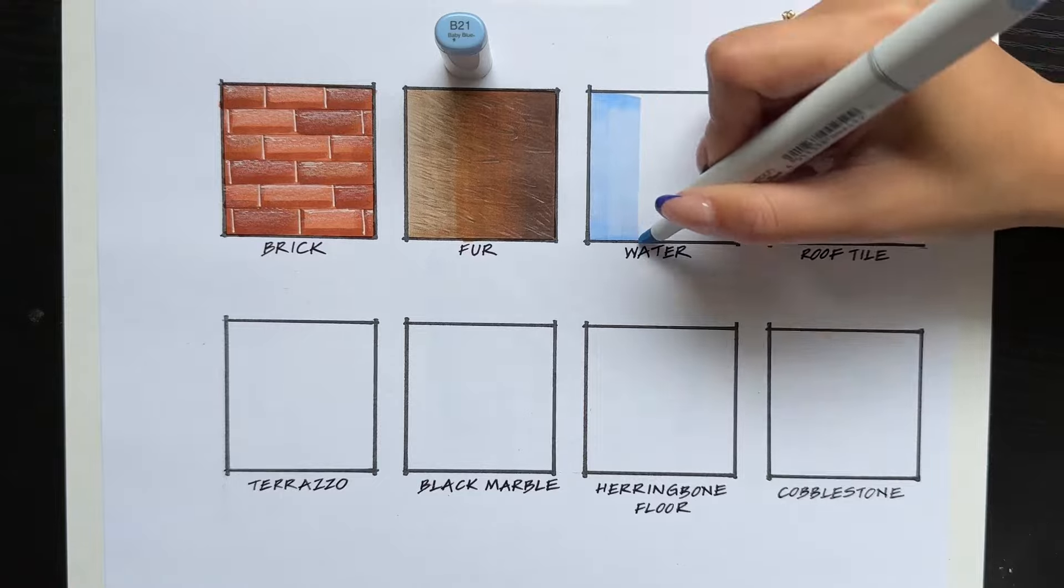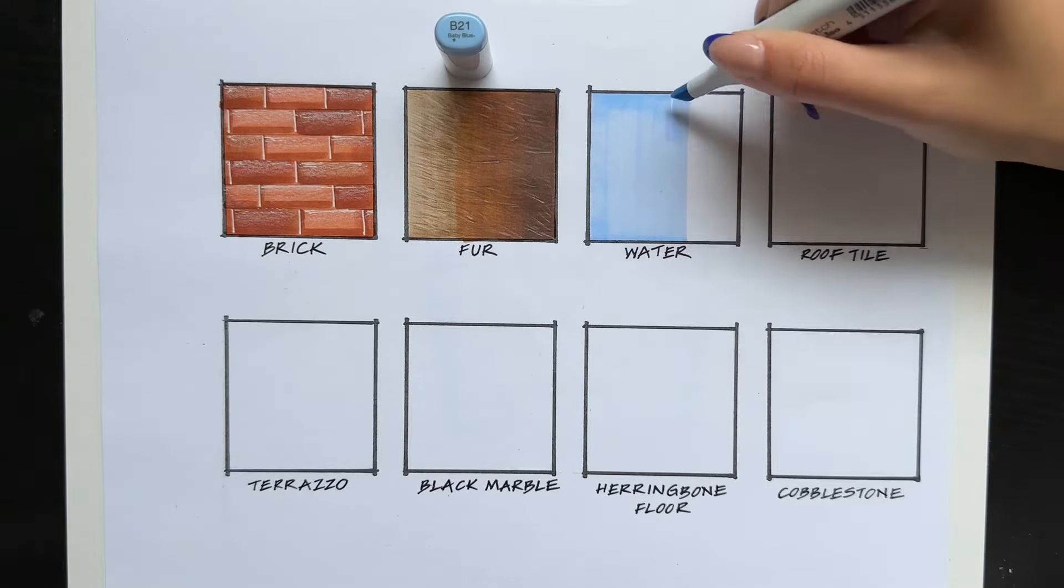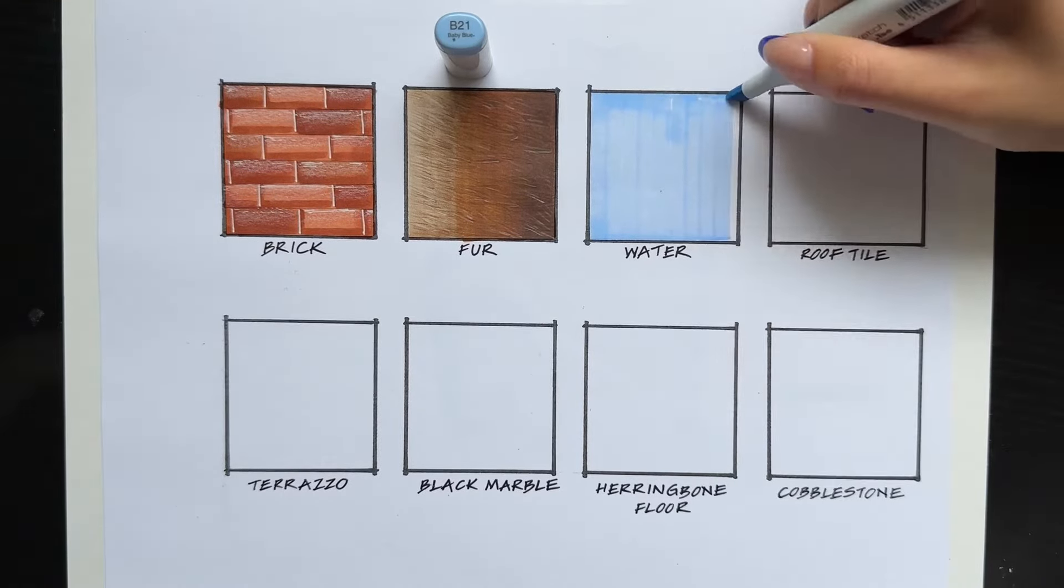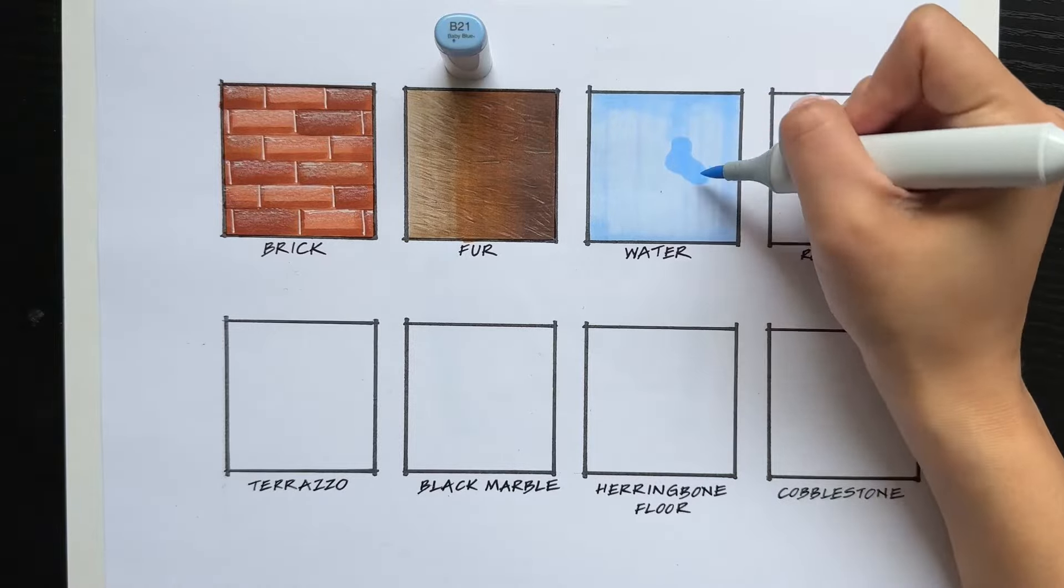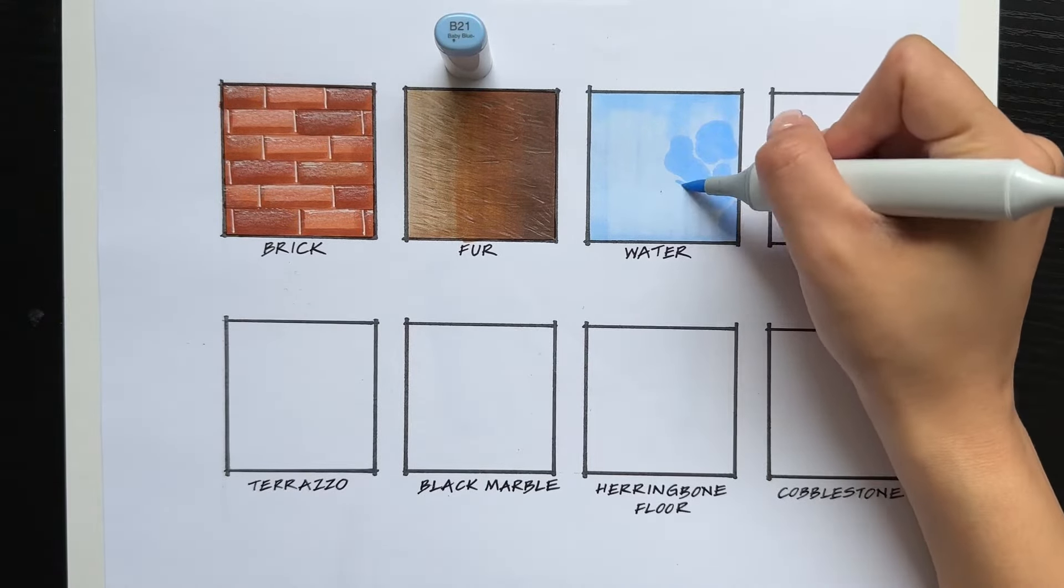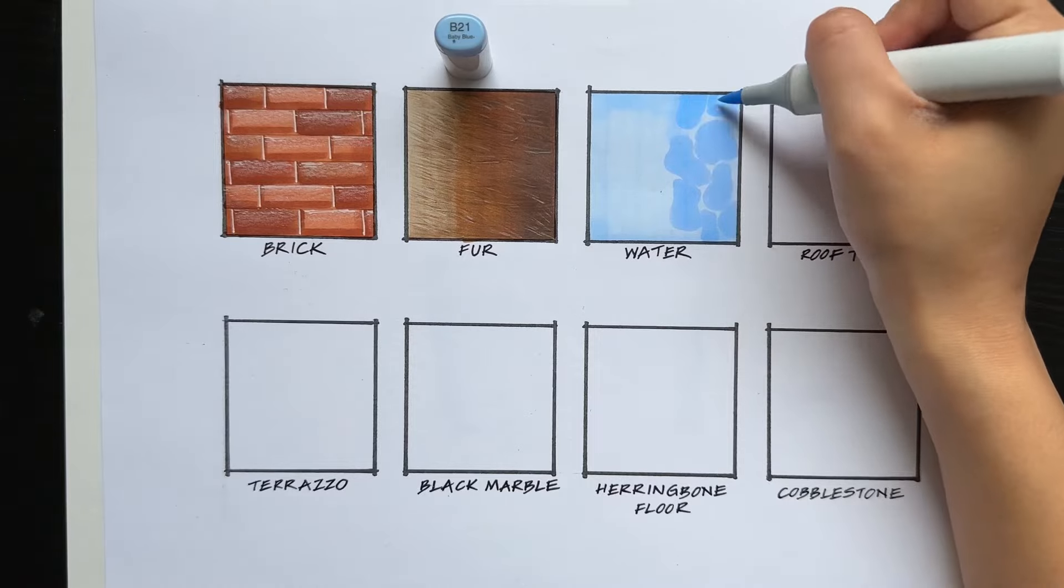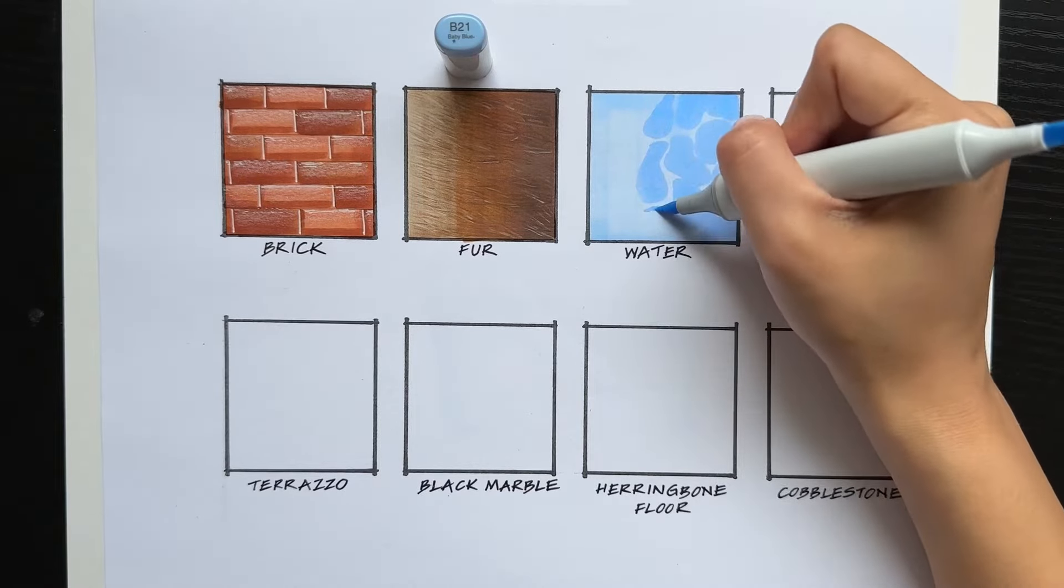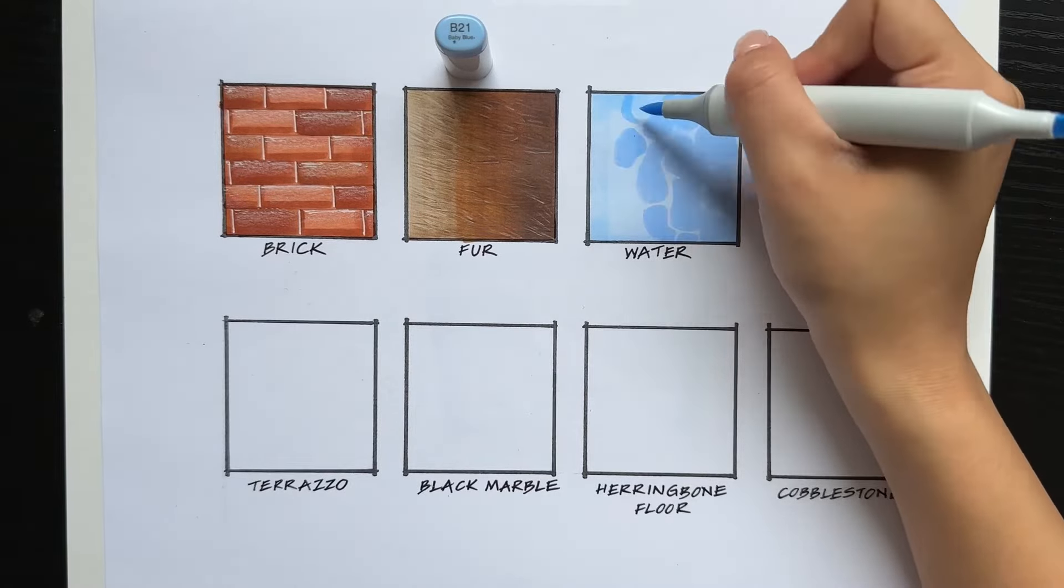Next up, we have water. Sometimes you could be hand-rendering this on your floor plan. Maybe there's a pool in the backyard, so this could be a helpful texture for that. It's water from a top view. So after putting on the base coat, I'm putting these randomized shapes.